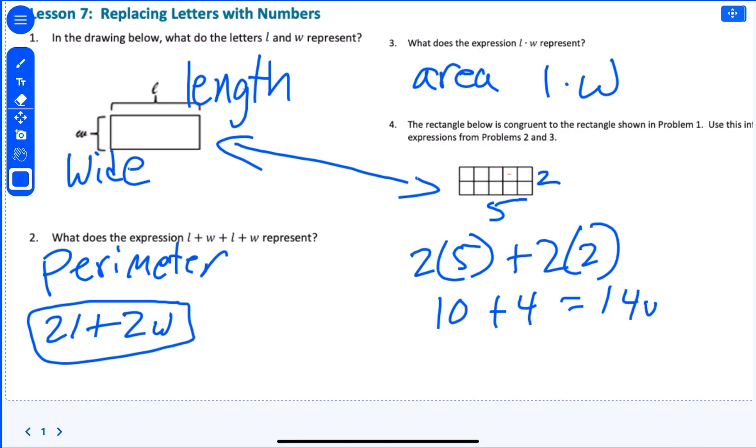It says to do the area. Area is L times W. So what's L? It is five. What is W? It is two. So it would be 10 units squared.